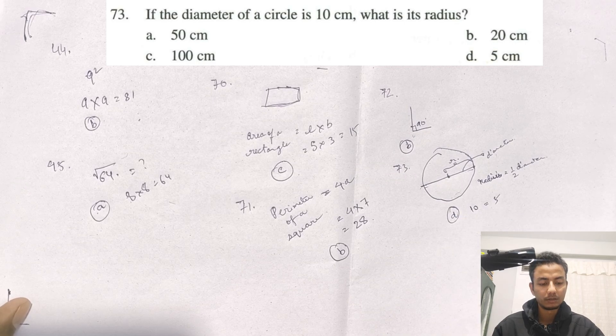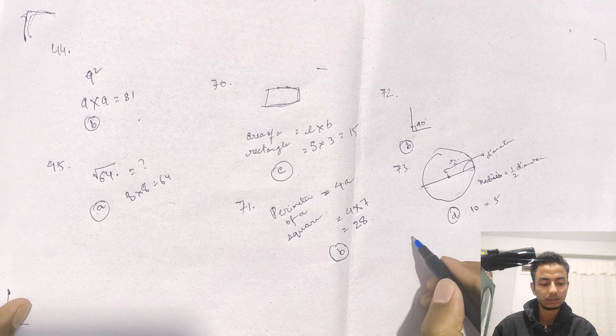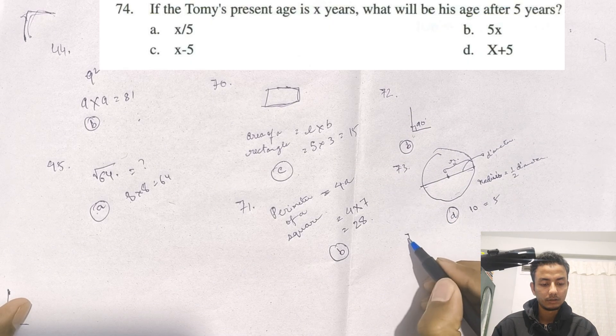For question 73, the correct option is D — the radius is 5 cm (half the diameter of 10 cm).